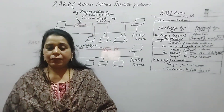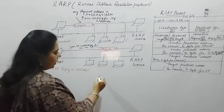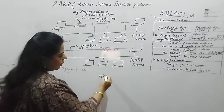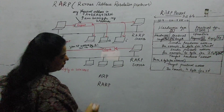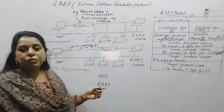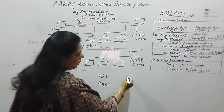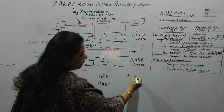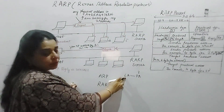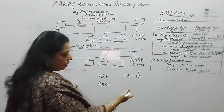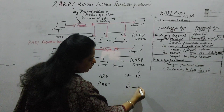RARP stands for Reverse Address Resolution Protocol. The previous protocol you learned was ARP, Address Resolution Protocol. The reverse task of what ARP was doing is done by RARP. ARP was trying to map a logical address with a physical address — finding the physical address for a given logical address. RARP, on the other hand, will try to find out the corresponding logical address for a given physical address.